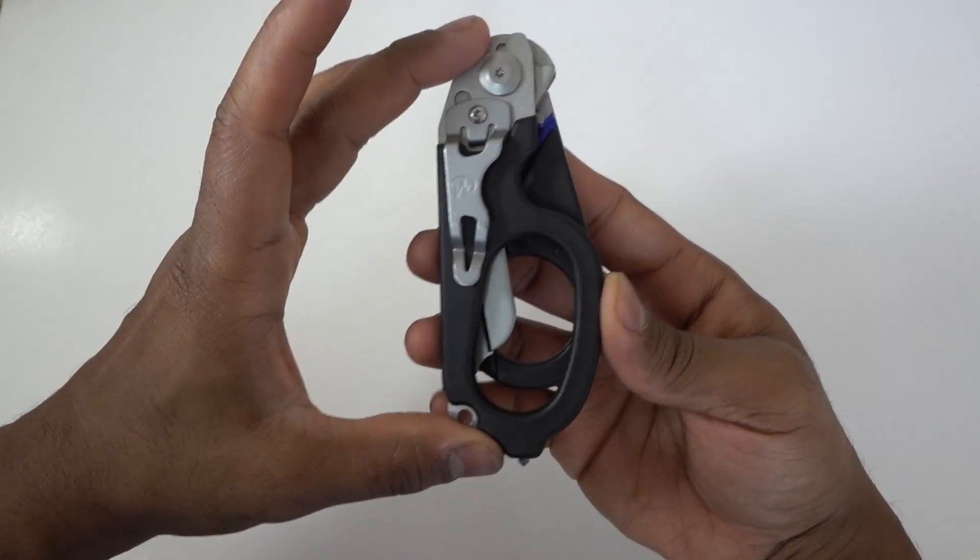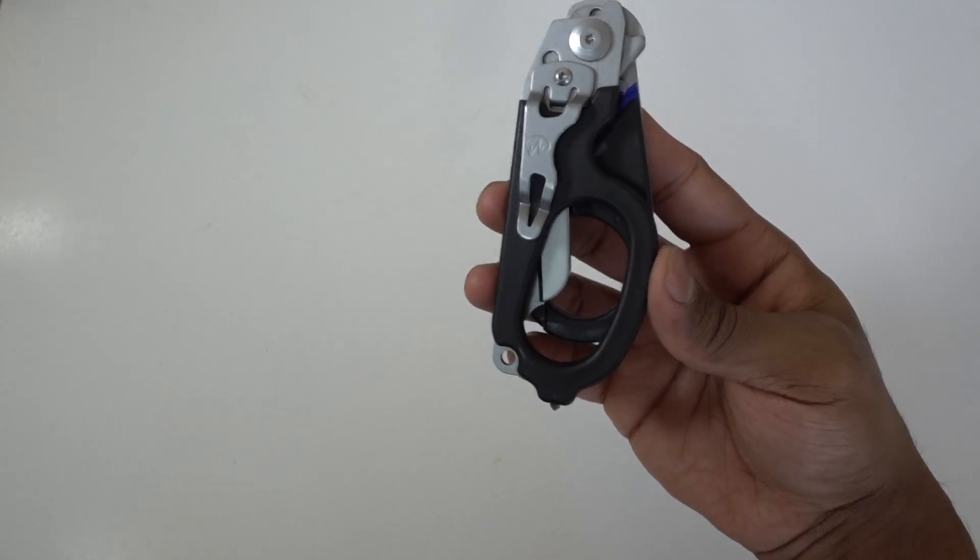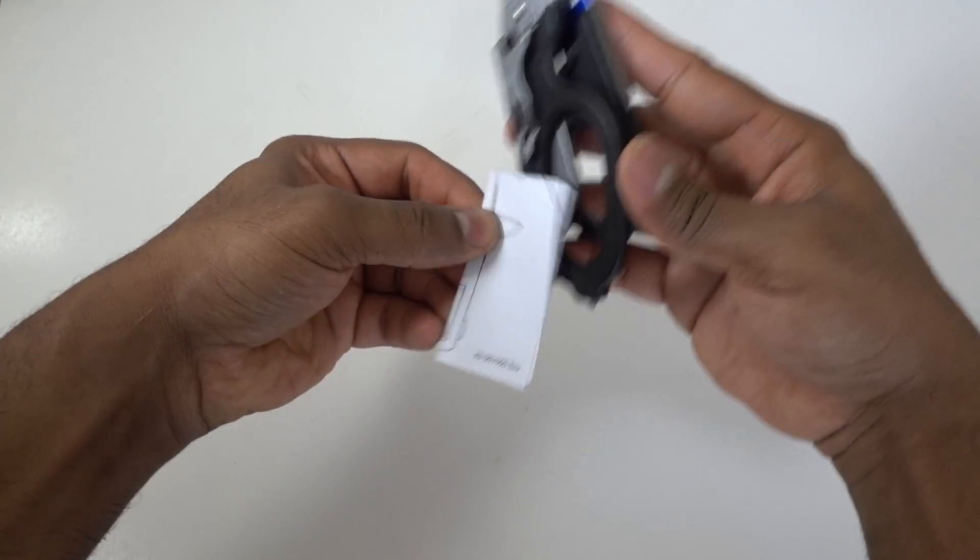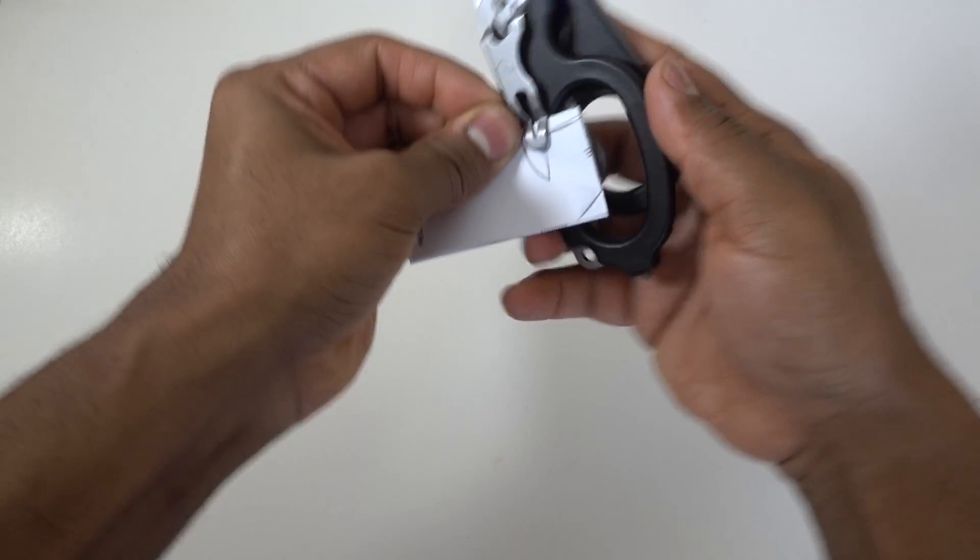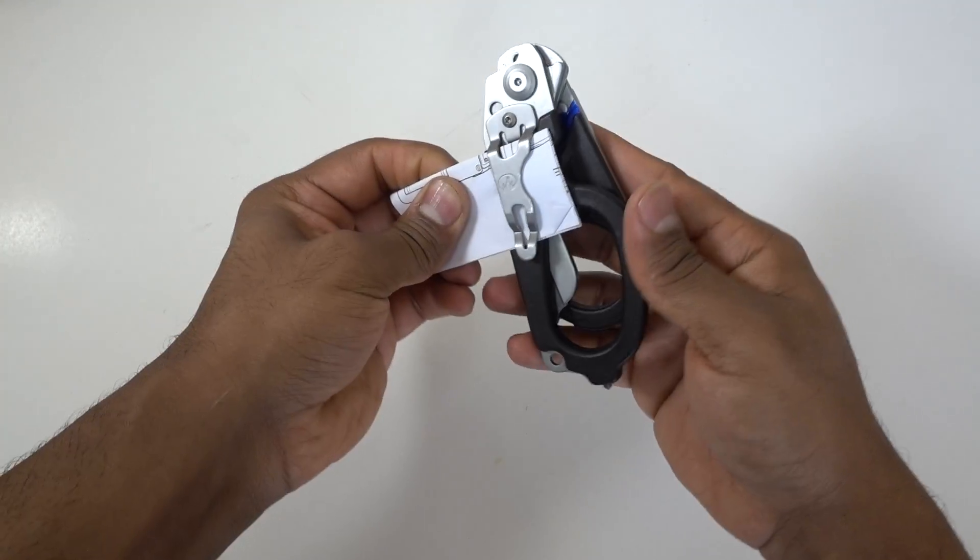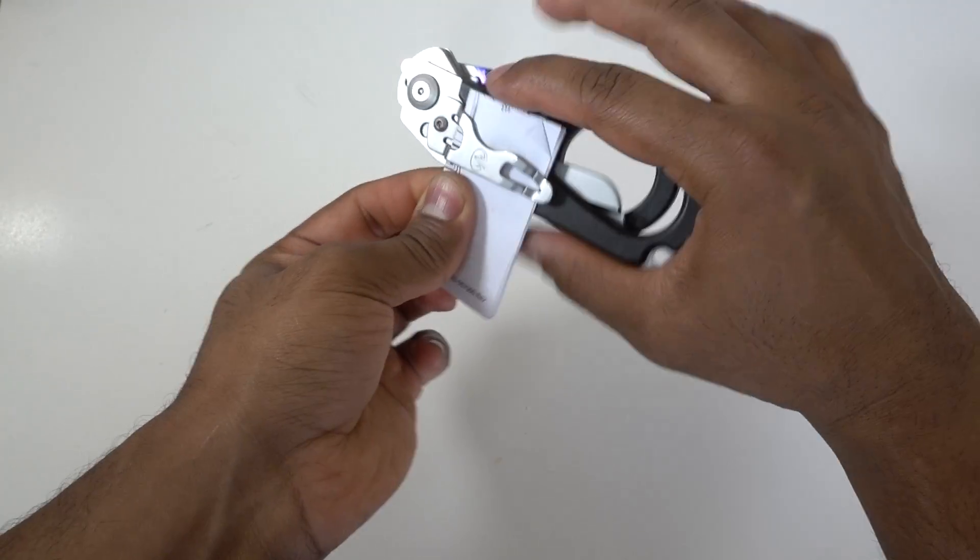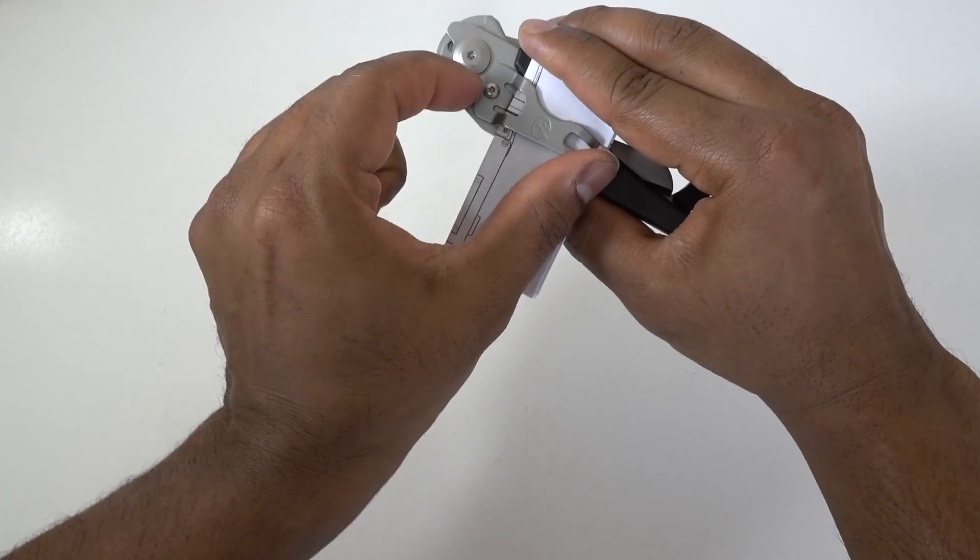It can fit on the side of your pocket. For example, this is your pocket, and it fits just like that. I usually keep the big side inside my pocket and only this part is visible from outside.